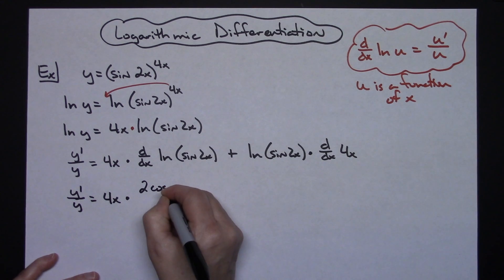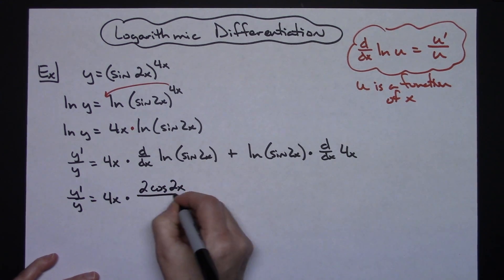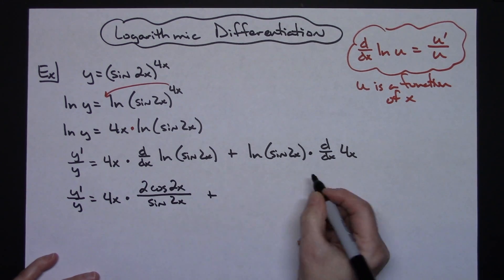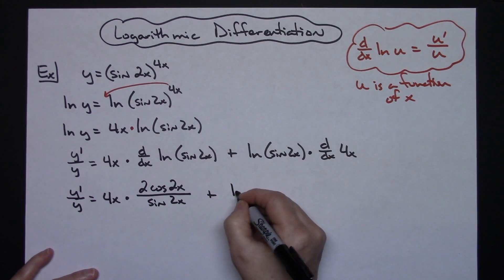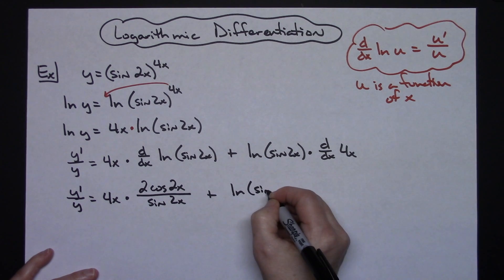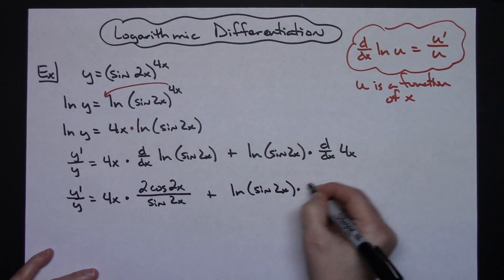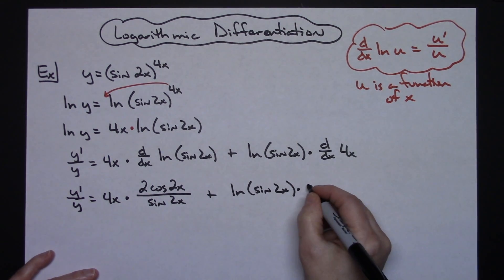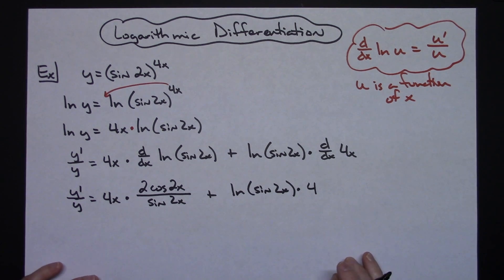This all stays the same, so natural log sine of 2x. And derivative there's a straight derivative of 4.